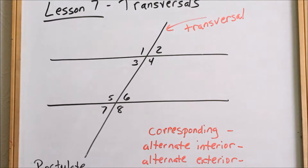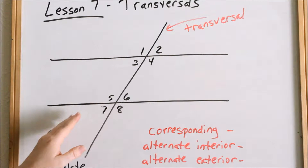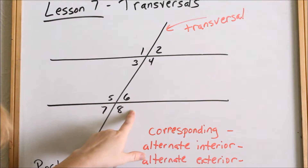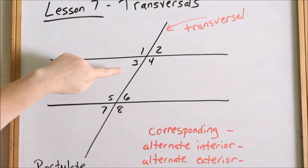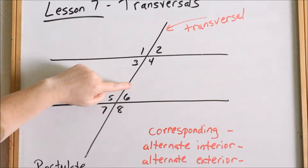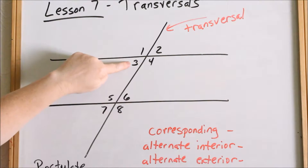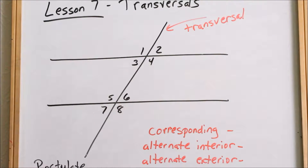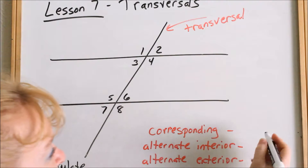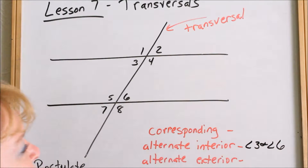So let's talk about alternate interior angles. When you alternate something, you are going from one side to another. If you want to be on alternate sides of the transversal, you start out on one side and then go to the other side. So when we talk about alternate interior, we are looking at only interior angles — three, four, five, and six. But to be alternate, you need to be on opposite sides of the transversal. Angle three is on the opposite side of angle six, so angles three and six are called alternate interior angles.